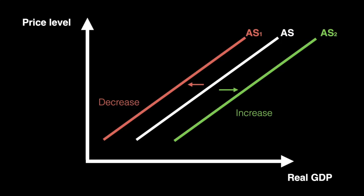We conclude our look at the factors that shift aggregate supply and will soon combine shifts of the curve with aggregate demand. This will allow us to further understand short-run macroeconomic equilibrium.